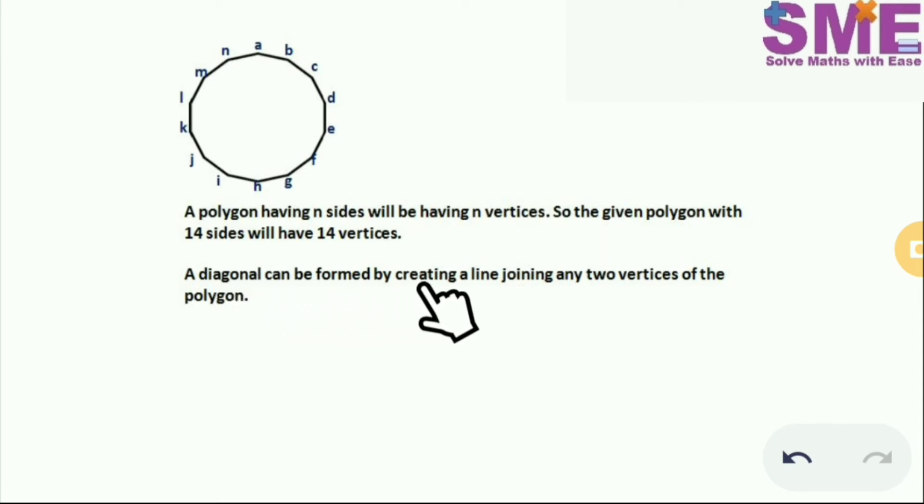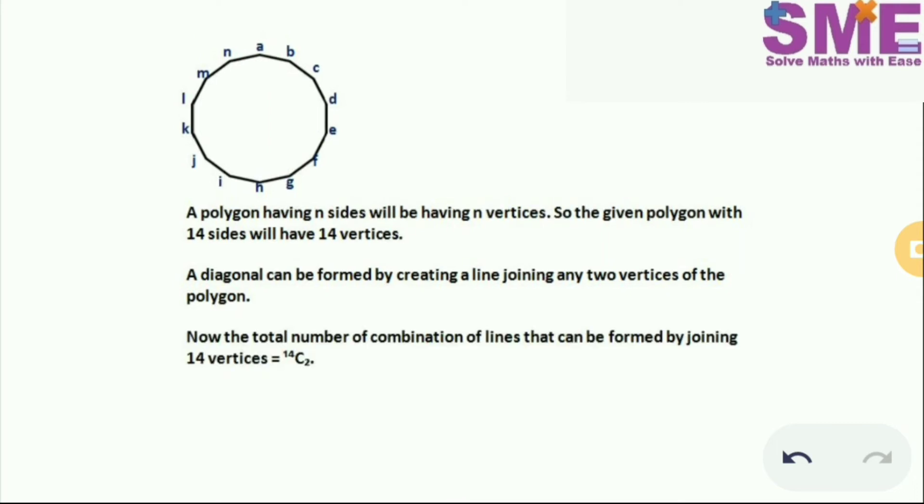A diagonal can be formed by creating a line joining any two vertices of the polygon. Now the total number of combinations of lines that can be formed by joining 14 vertices will be equal to 14C2.